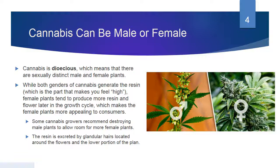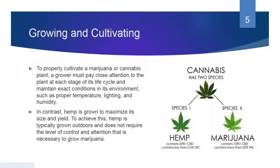The resin is excreted by glandular hairs located around the flowers and the lower portion of the plant. To properly cultivate a marijuana or cannabis plant, a grower must pay close attention to the plant at each stage of its life cycle and maintain exact conditions in its environment, such as proper temperature, lighting, and humidity. In contrast, hemp is grown to maximize its size and yield. Hemp is typically grown outdoors and does not require the level of control and attention that is necessary to grow marijuana.